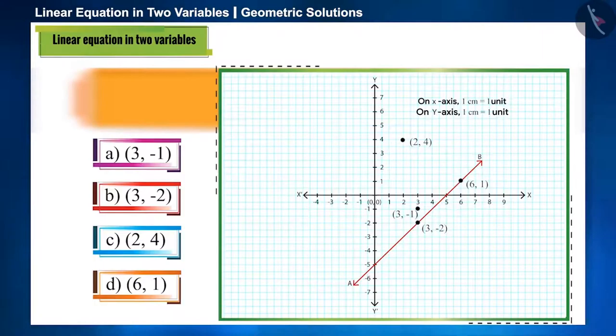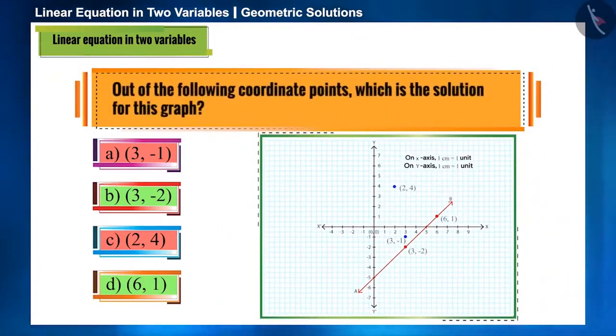Here, two points, 3, -2 and 6, 1 are on this line. That means, both these points are solutions of this equation. Let's move to the next question.